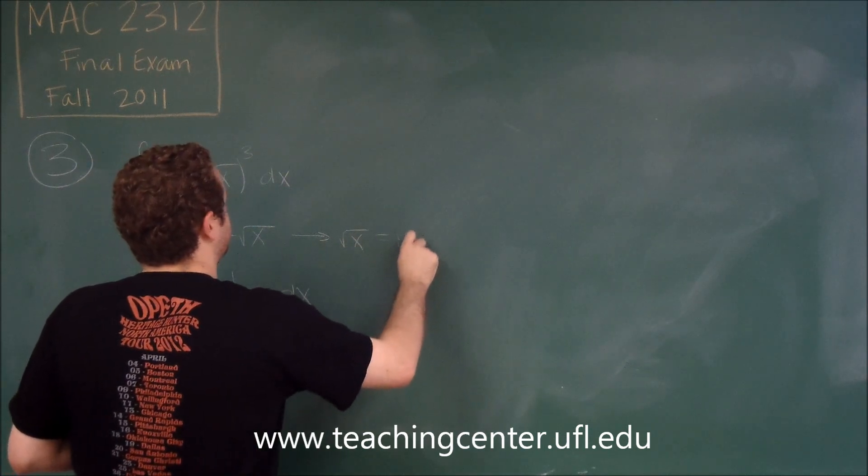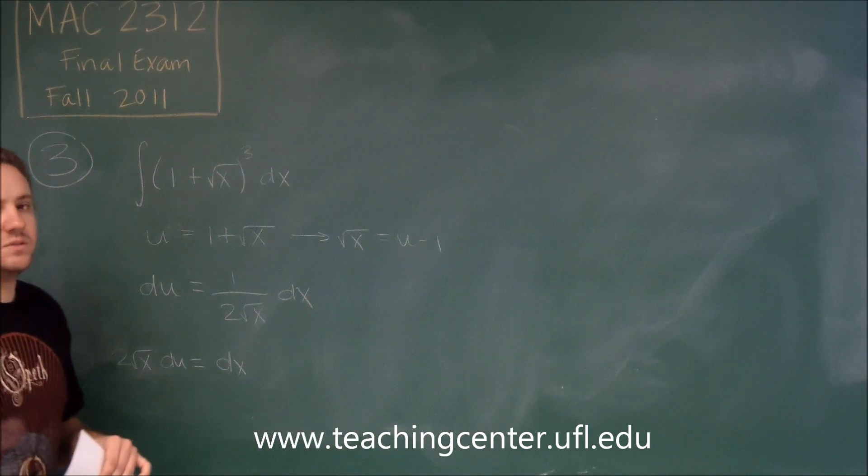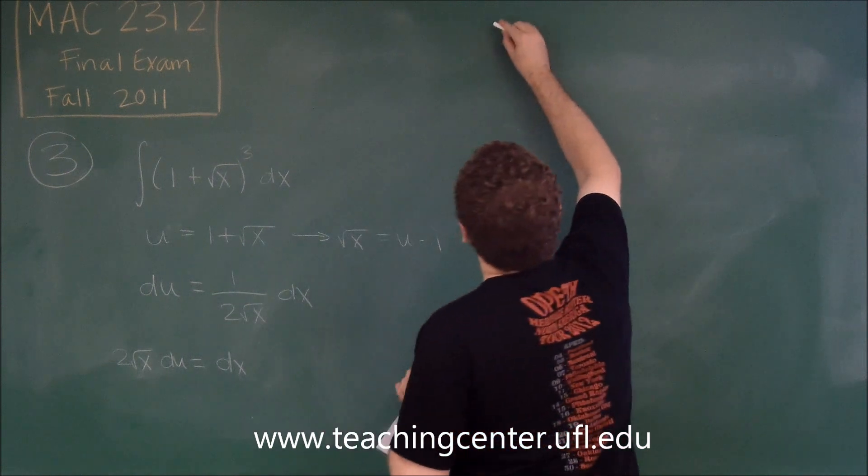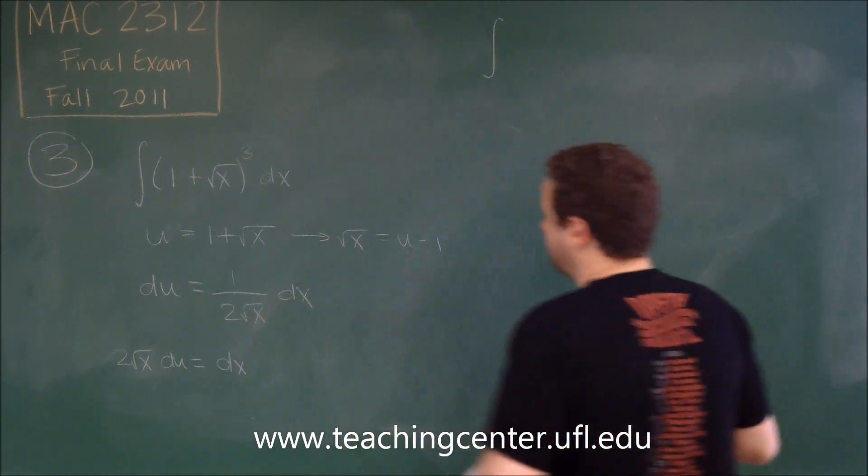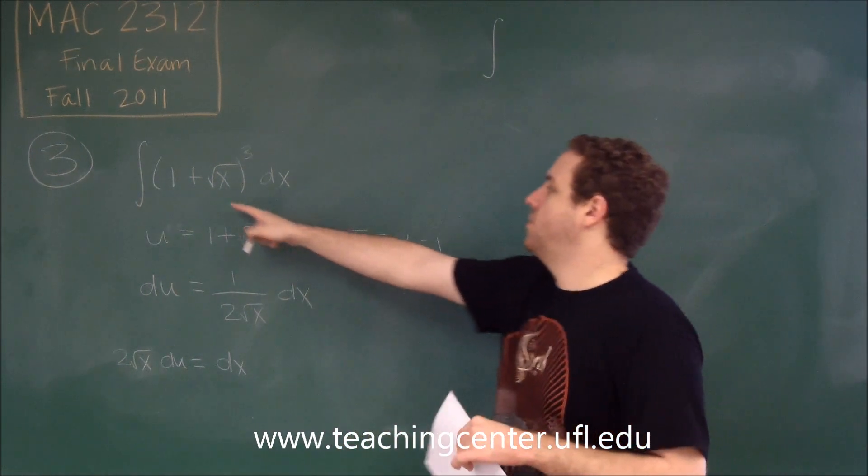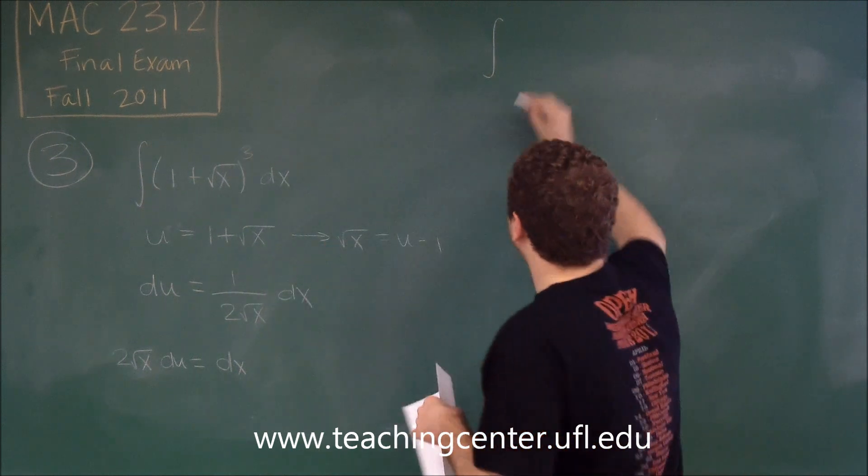But we can rearrange square root of x to be in terms of u from our original equation. Square root of x is in fact u minus one. So let's rewrite our integral now with all of those substitutions. So instead of one plus square root of x cubed, we get u cubed.